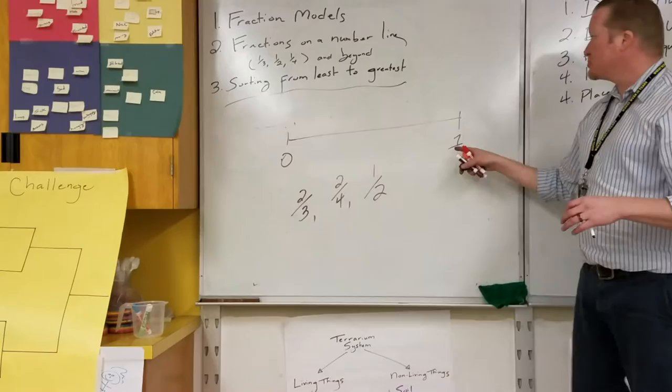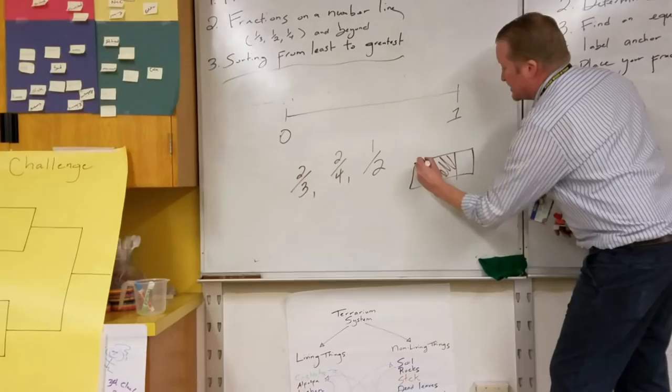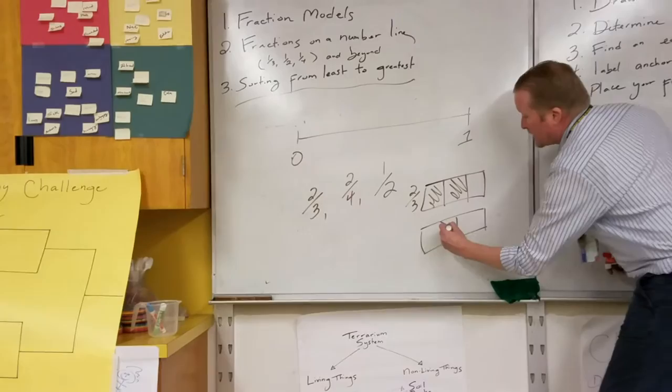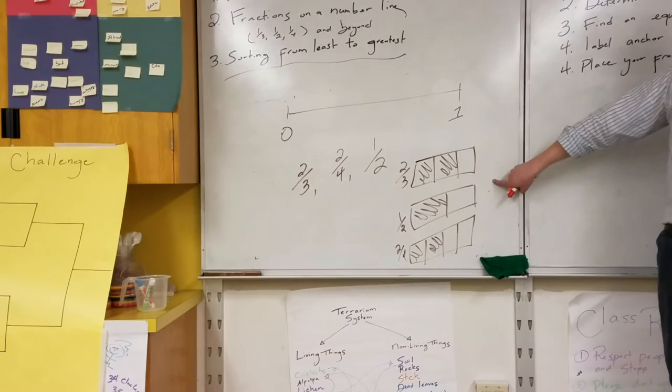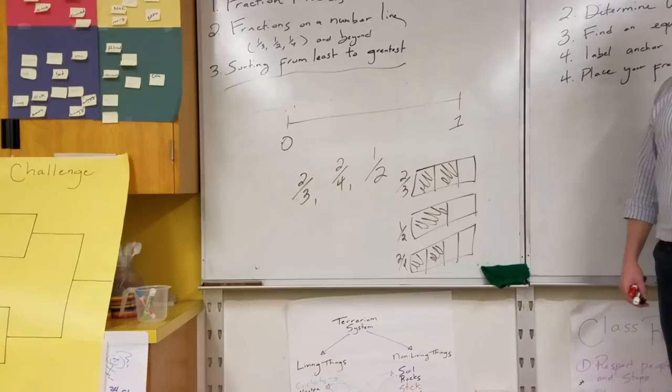Well, they can actually kind of create number models for these that will help them determine which one is least or closest to zero, which one is closest to one. For example, there's my two thirds, there is my one half, my halves and my halves, or fourths. Riyoko, please tell me, of these three fractions, which one is the least, which one is closest to zero? One half. One half.